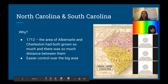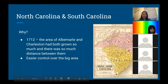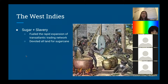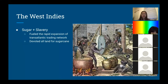Carolina was eventually split mainly because it was easier to control over such a large area of land. We also have the West Indies near the Caribbean, where they mainly planted sugar cane. There was a massive use of enslaved labor — many Africans were transported from Africa to work on sugar cane plantations.